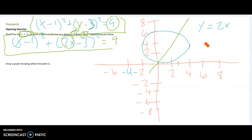This doesn't need to be here. Okay, so this says, given a line at y equals 2x, is there a point on a line at a distance of 3 from (1,3)? Explain how you know.